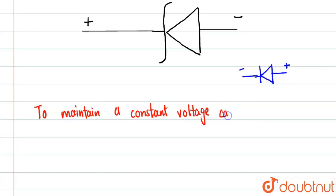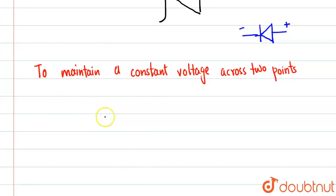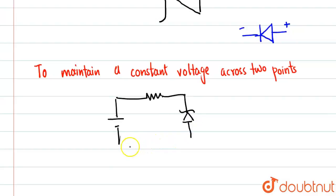Let's take a circuit as an example. We have a battery, a resistor R1, and a Zener diode. We also add another resistor in the circuit.